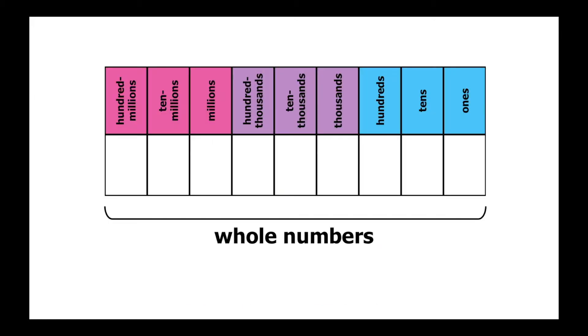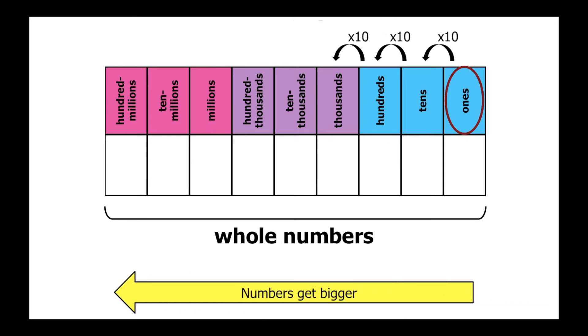Let's take a look at our place value chart. We know from previous lessons that when we count whole numbers, we start in the ones place, and that as our numbers get bigger, the place value is 10 times larger than the one before it.